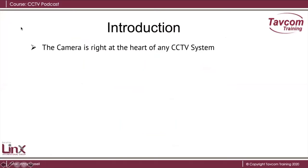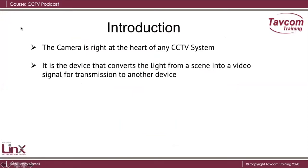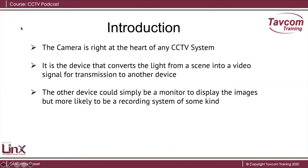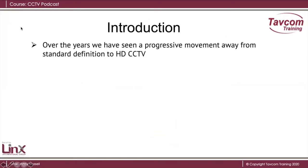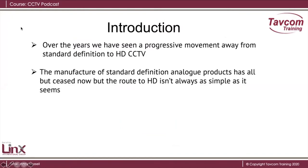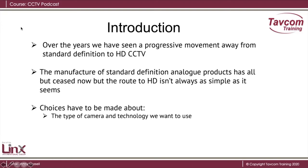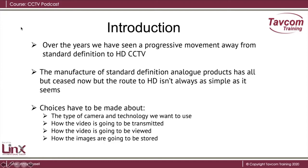The camera is right at the heart of any CCTV system. It is the device that converts the light from a scene into a video signal for transmission to another device. The other device could simply be a monitor to display the images, but more likely to be a recording system of some kind. Over the years we have seen a progressive movement away from standard definition to high definition CCTV. The manufacture of standard definition analog products has all but ceased now, but the route to HD isn't always as simple as it seems. Choices have to be made about the type of camera and technology we want to use, how the video is going to be transmitted, how the video is going to be viewed, and of course how the images are going to be stored.